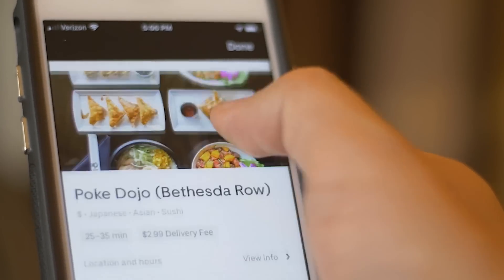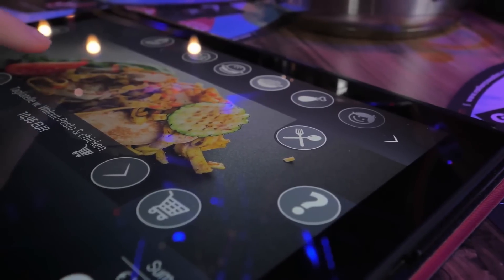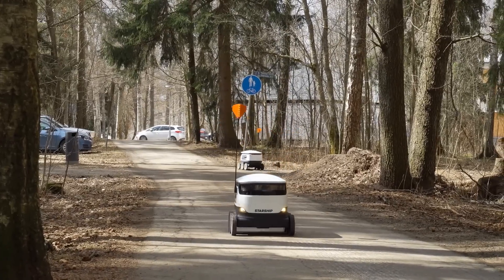Self-service kiosks and mobile apps have become common features in fast food chains, allowing customers to place their orders independently. This not only reduces waiting times, but also improves order accuracy and customization.